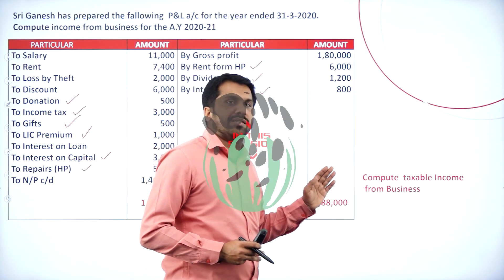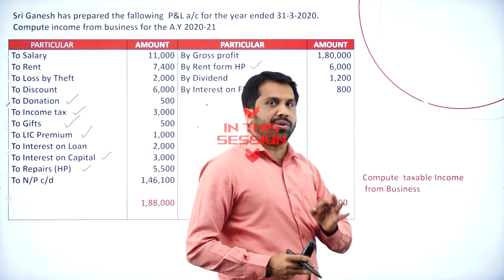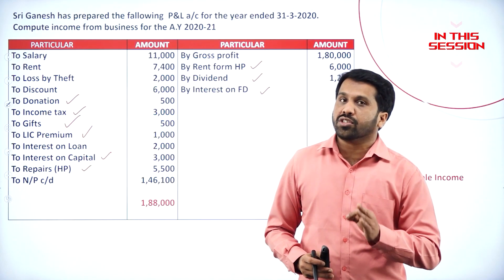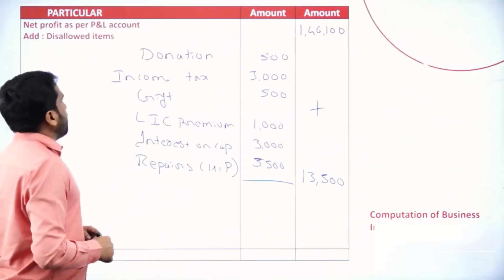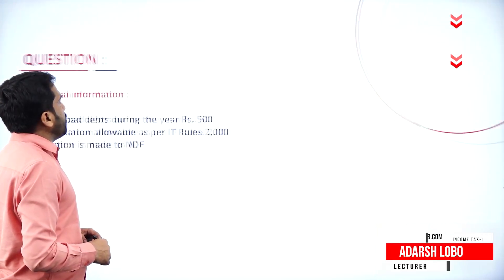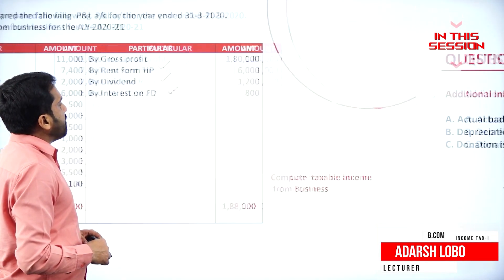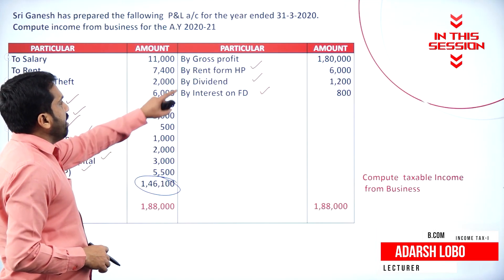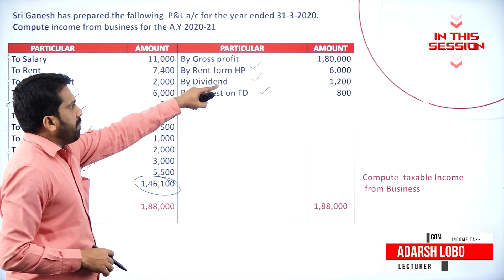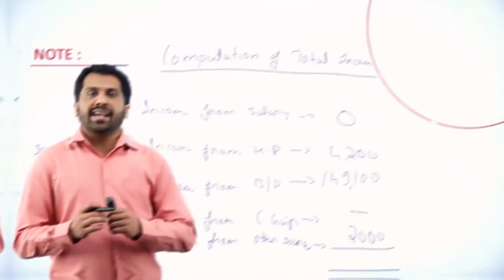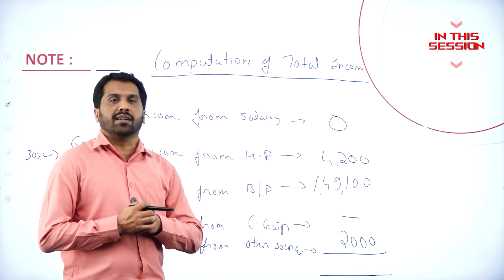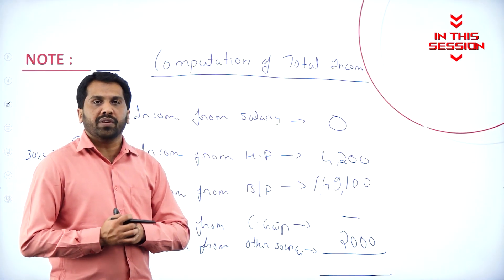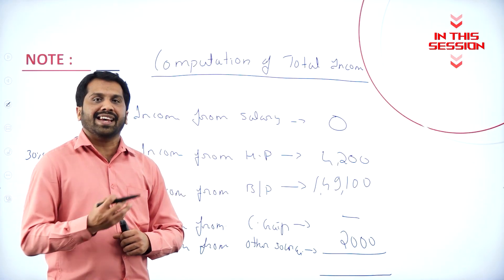As per your syllabus, you have only computation of business income. Income from house property as per the question — rent from house property. Any dividend received from an Indian company, we call it as exempted.